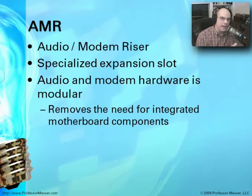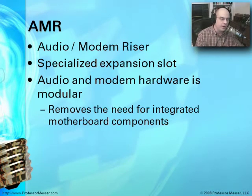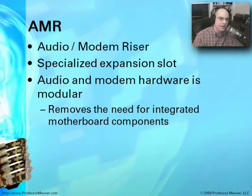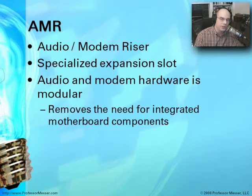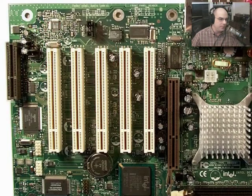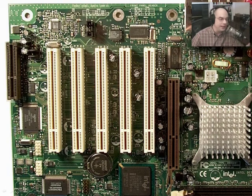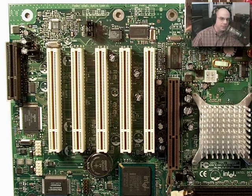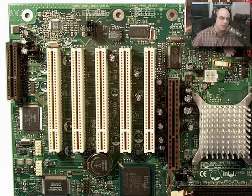You may be asked about these next two expansion types on the A-plus exam, although you don't see them much on today's motherboards. The first is the AMR — Audio Modem Riser. It's a very specialized expansion slot designed so that motherboard manufacturers wouldn't have to put audio and modem technology directly on the board. Here it is — this tiny little slot on the left — where you could plug in a modem or audio card directly. These days, audio chips are very small and built onto the motherboard, and modems are rarely used.